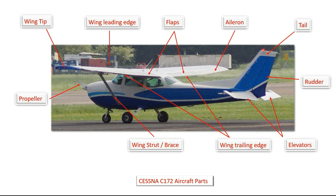On the C172 we have a wing strut or brace which holds the wings up. It's attached to the underneath of the wing and to the side of the aircraft, as you can see in the picture.